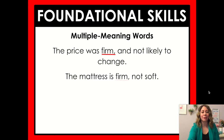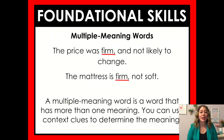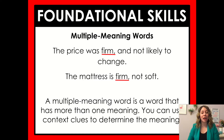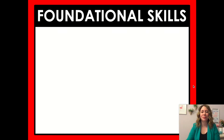So there we have the word 'firm.' A multiple meaning word is a word that has more than one meaning. You can use context clues to determine the meaning. All right, so let's try some more.